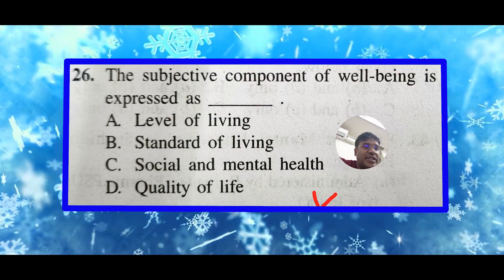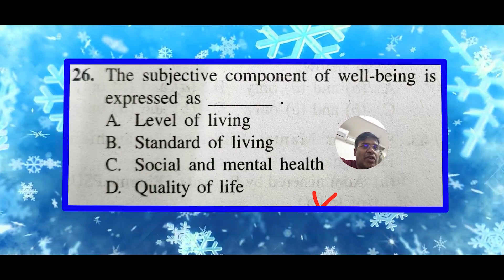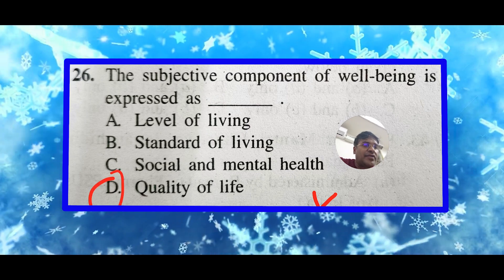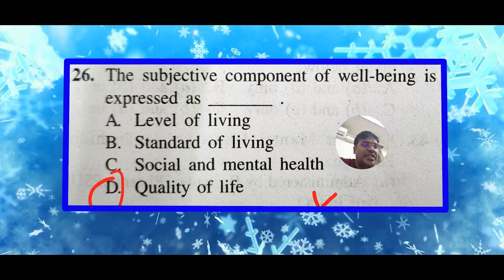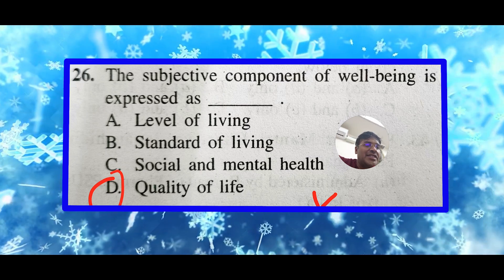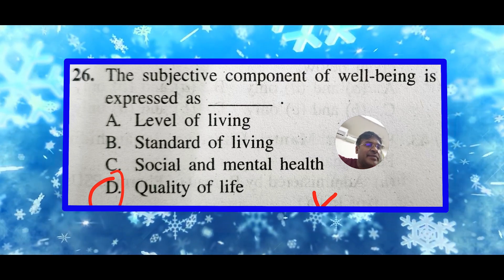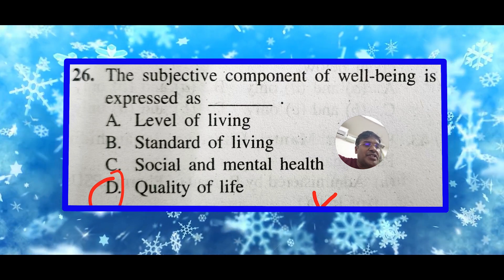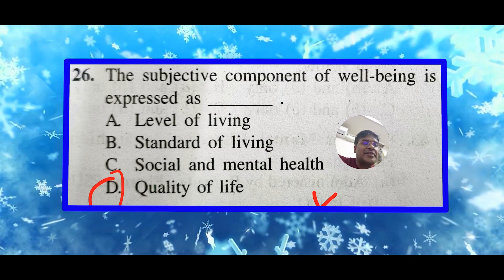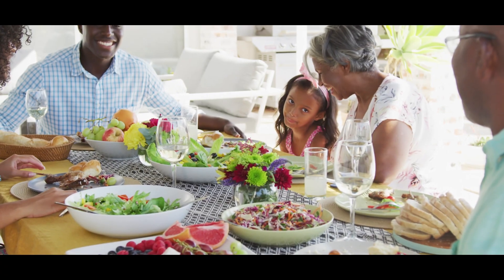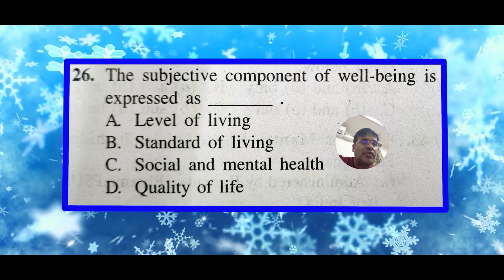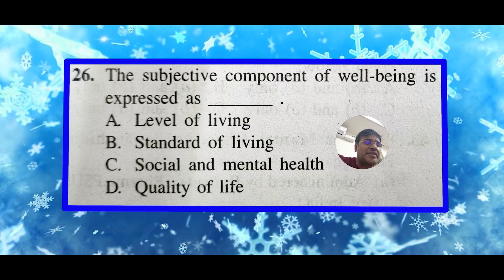Quality of life refers to the subjective component of well-being, while levels of living or standard of living might be gauged through more tangible metrics such as income or possessions. Quality of life encompasses broader aspects including happiness, satisfaction, and personal perceptions of one's life situation.